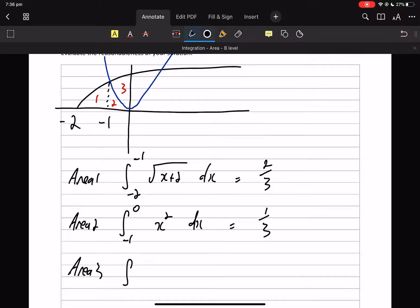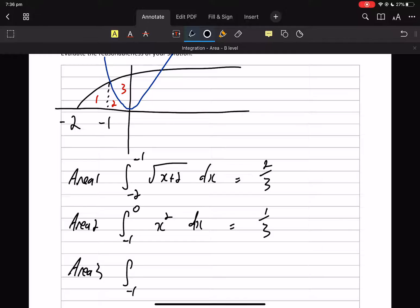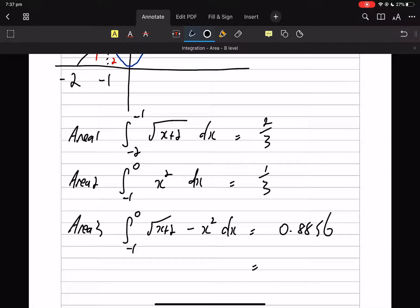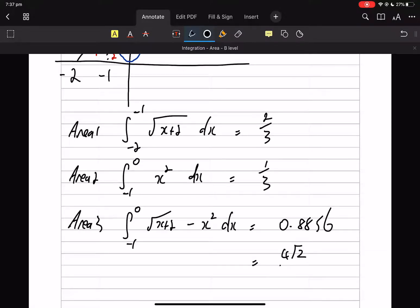And Area 3, now Area 3 is again from -1 to 0, but it's top minus bottom. So I've got the √(x+2) on top and the x² on bottom. In your calculator you're going to get 0.8856, bit nasty. Now if you do it manually, I'm thinking you're going to get 4√2/3 - 1.